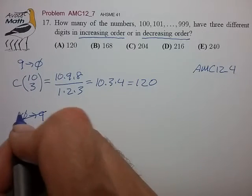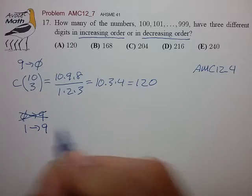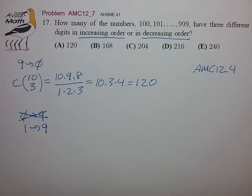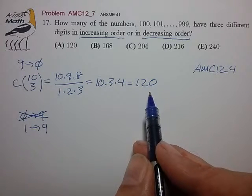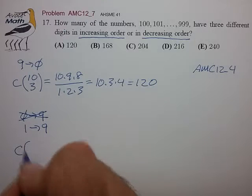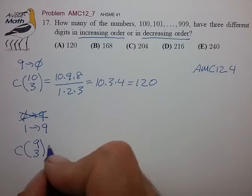So essentially we have to choose these digits from the set one through nine, just as we did in problem AMC 12 underscore four. And after we do that, the problem is pretty much the same as the first case where we now have to choose three digits from a set of nine using our combinatorial math.